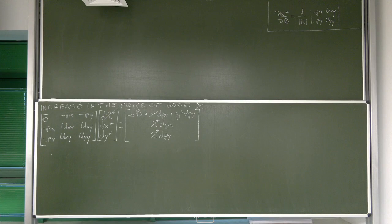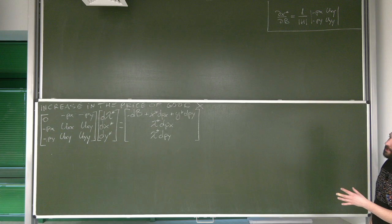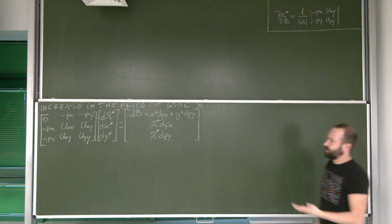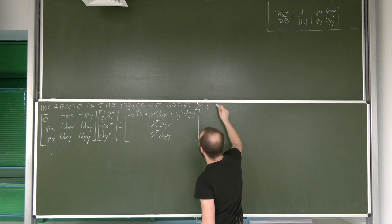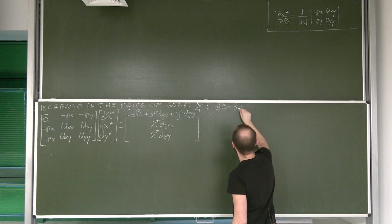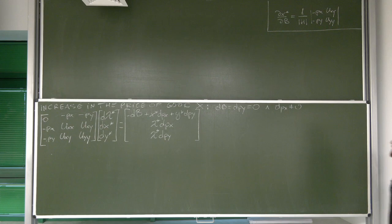In the previous video we established what is going to happen to the quantity of good X — the equilibrium quantity, or optimal quantity of good X — when the budget is changed. Now we're going to see what is going to happen to optimal choices of customers: how much good X and good Y does the customer buy if the price of good X is going up. So what we are now considering is the situation where budget as well as price of good Y are remaining constant, and the only thing that changes is the price of good X.